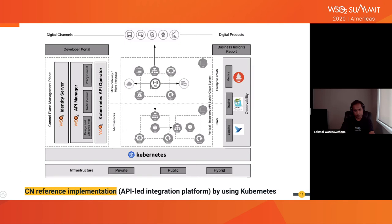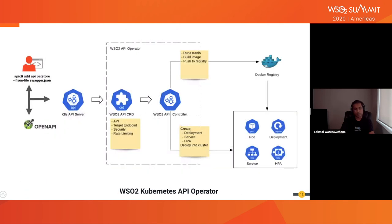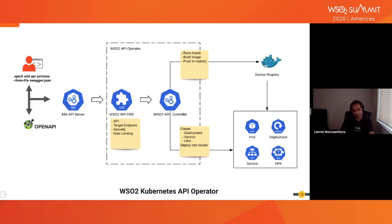Let's look at some details of the WSO2 Kubernetes API operator. It has four custom resource definitions: API, target endpoint, security, and rate limiting. These custom resource definitions expose a set of Kubernetes APIs related to API lifecycle management functionalities. Combined with custom controllers, they are capable of deploying API gateways by auto-generating artifacts like Docker images, Kubernetes deployments, services, pods, config maps, and horizontal pod autoscalers. The only required artifact is a well-defined API contract — no need to worry about other technology jargons like Docker, Kubernetes, and so on.